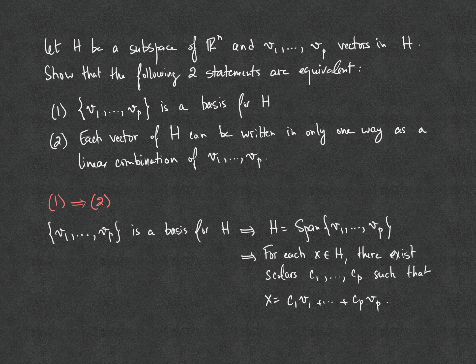Let's first recall the proof that statement 1 implies statement 2. If V1...VP is a basis for H, it implies in particular that V1...VP is a spanning set for H. In other words, H equals span{V1...VP}, which means that any vector X in H can be written as a linear combination: X equals C1V1 plus C2V2 plus ... plus CpVP.